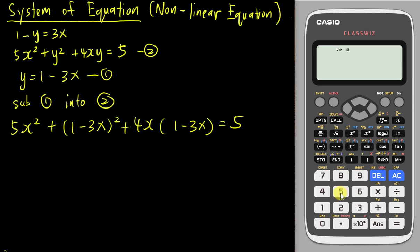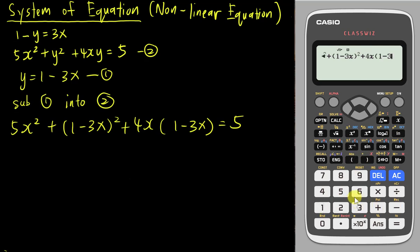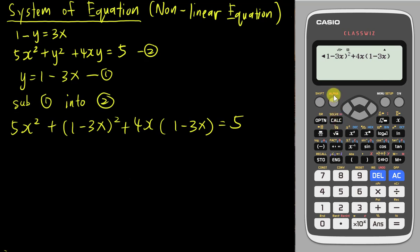Let's start typing: 5x². I also like that this calculator has a dedicated x button, which makes it very easy to type. So: plus (1 minus 3x)² plus 4x(1 minus 3x). Over here you cannot use the normal equal sign — if you type that, the calculator will give you half the result, which is not what you want. You need to use the red equal sign, which you get by pressing alpha then the calculation key.